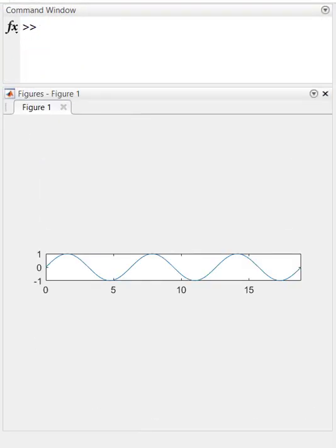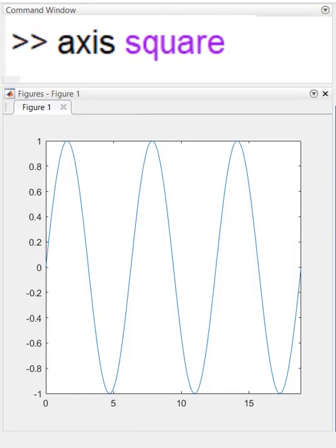Last point, if your graph is rectangular and you want a perfect square, use axis square.